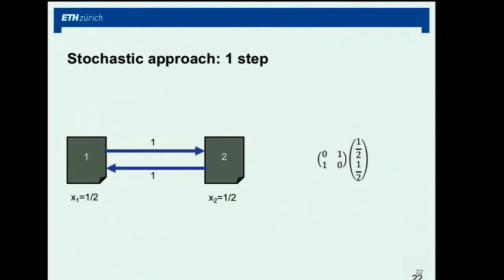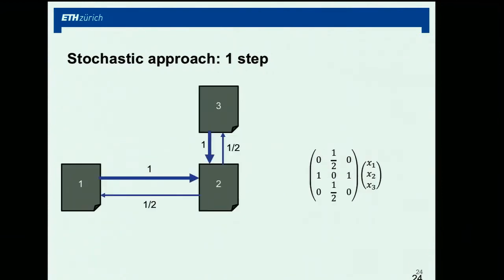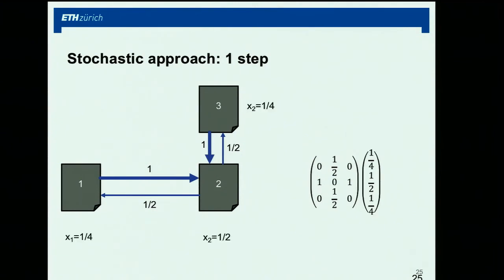Here's an example where this is solved: the final solution is 50-50, and if you multiply it with this matrix you get the same thing back — that's a fixed point. That's exactly the idea of PageRank. You can verify with the stochastic matrix: 0+1+0=1, 1/2+0+1/2=1, 0+1+0=1 — every column sums to 1. You build this matrix out of the web graph and you're looking for a fixed point.